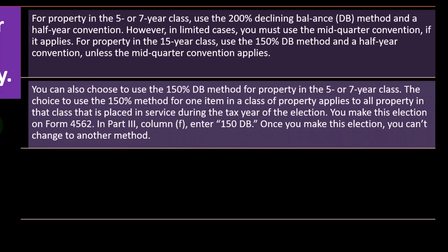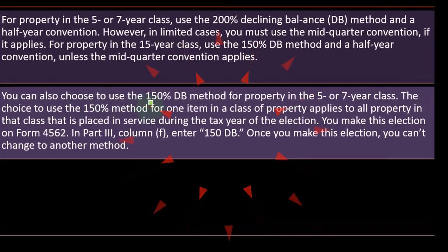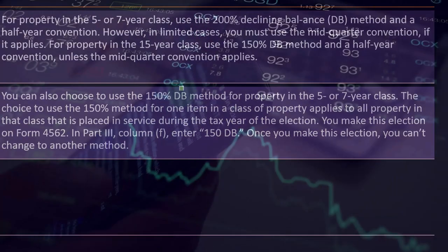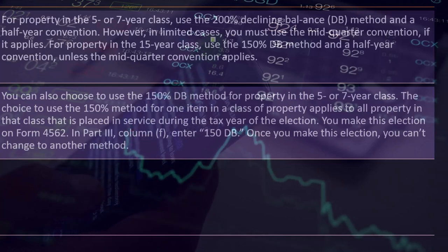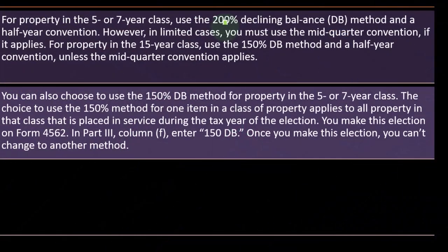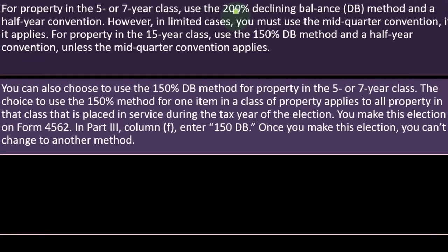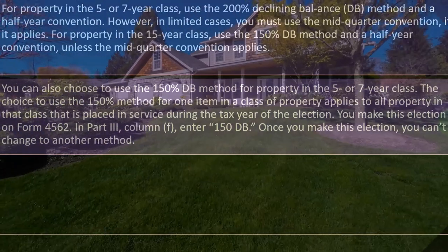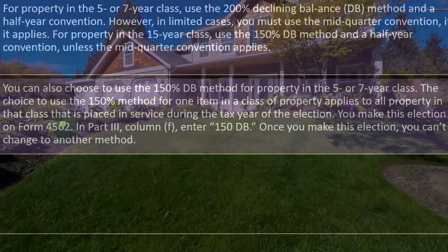You can also choose to use the 150% declining balance method for property in the five or seven-year classes. So they're giving you a little leeway — you could default down from 200% to 150%, but normally you wouldn't want to do that because we'd rather have the depreciation sooner, unless we're expecting more income in the future and therefore higher tax brackets, in which case maybe it would be advantageous to delay the depreciation. The choice to use the 150% method for one item in a class of property applies to all property in that class.